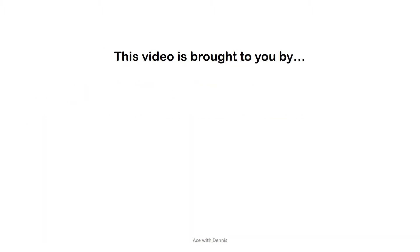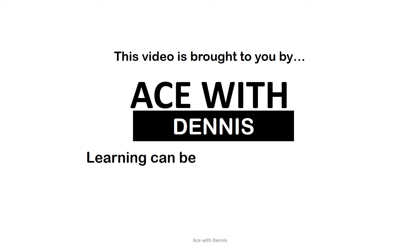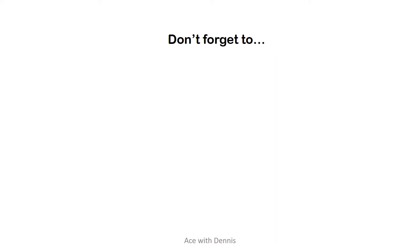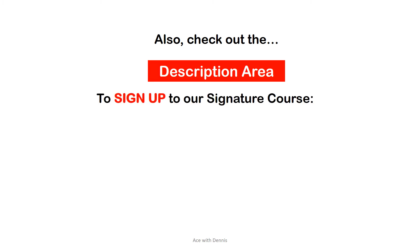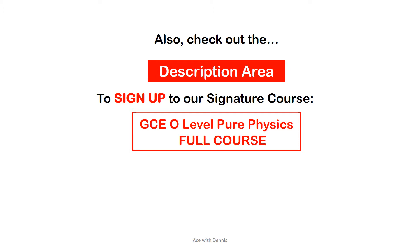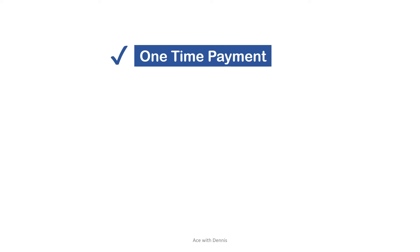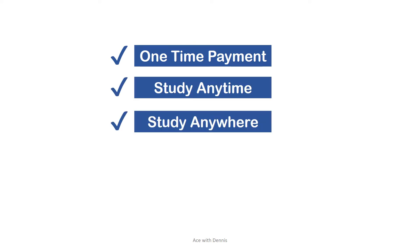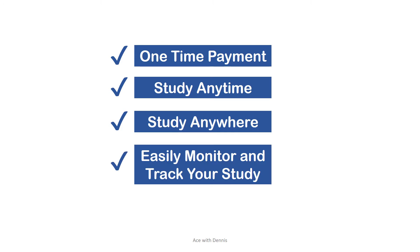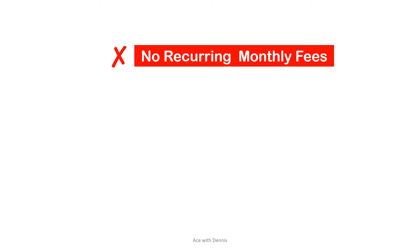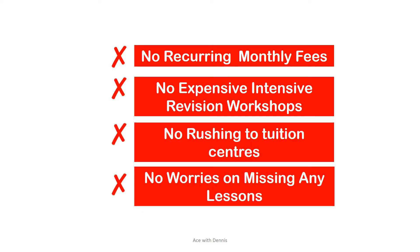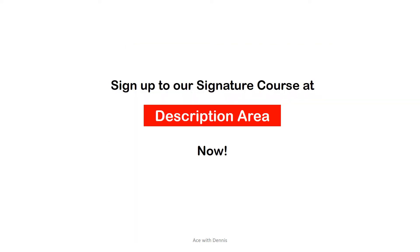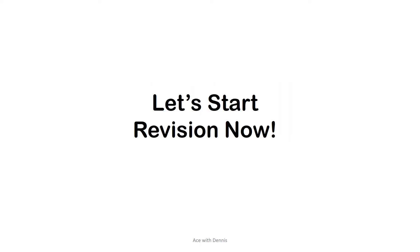This video is brought to you by Ace with Dennis. Now learning can be smart, not hard. Don't forget to subscribe and press the bell notification button. Check out the description area to sign up to our signature course, GCSE level pure physics full course, at an unbelievable price. It's a one-time payment — you can study anytime, anywhere at your convenience, easily monitor your progress with the Udemy system. No recurring monthly tuition fees, no expensive intensive revision workshops, no rushing to tuition centers. Sign up at the description area now.